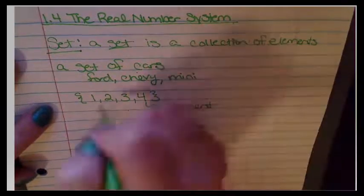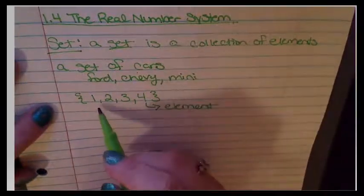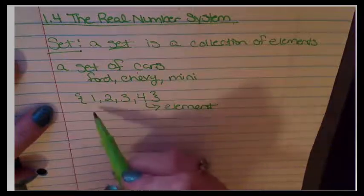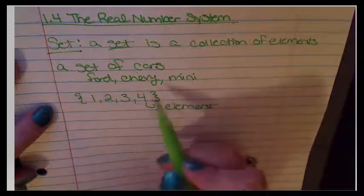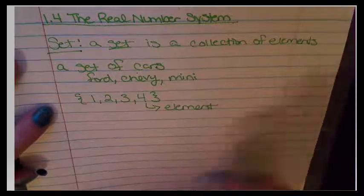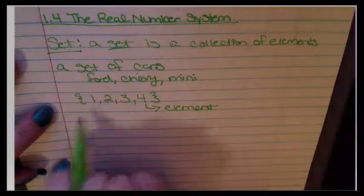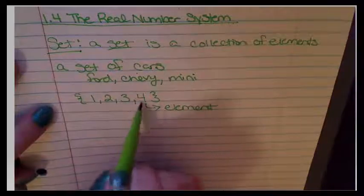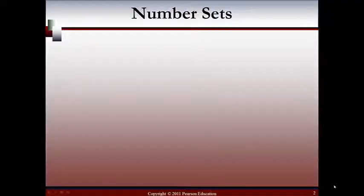So each one of these numbers is an element in that set. You don't have to get super technical with this, but we will be covering many different sets. So it's good to understand that the curly brackets are signifying that this is a set of numbers or a collection of different elements and that each item within that set is its own element. Now that we know what sets are, we can start to talk about number sets.